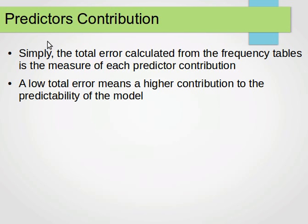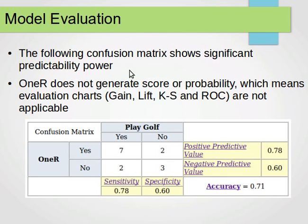The contribution of the predictors in this classifier is simply the total error calculated from the frequency tables — that is the measure of each predictor's contribution. A low total error means a higher contribution to the predictability of the model.